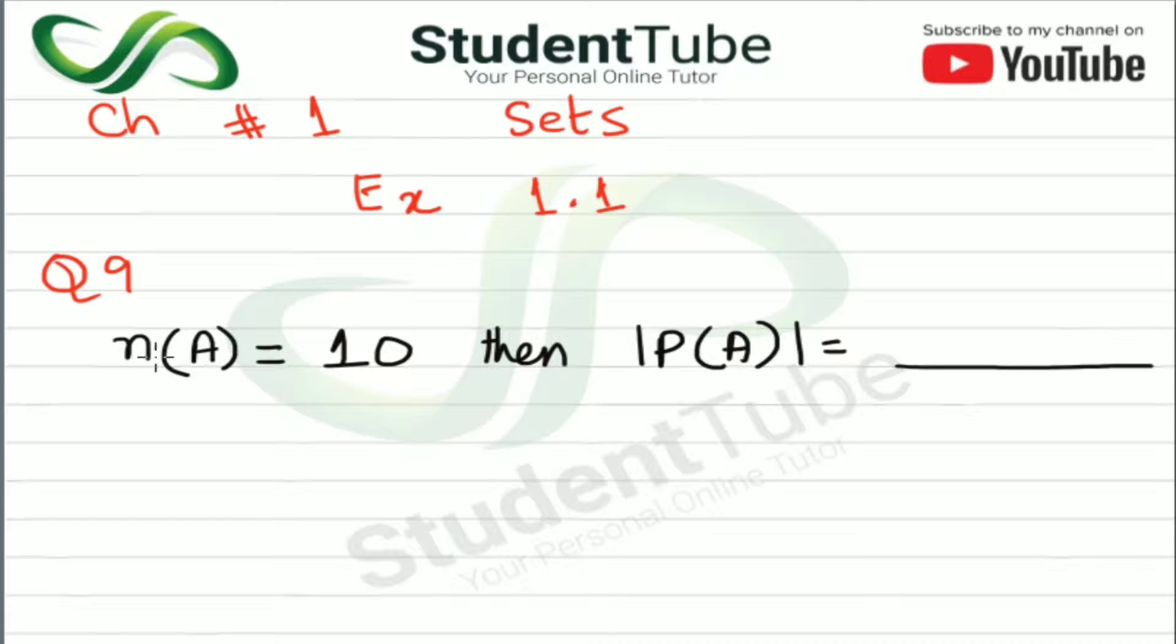Question number 9 is: N of A, i.e. number of elements in set A is equal to 10, then P of A, i.e. total number of subsets in A, what will be?